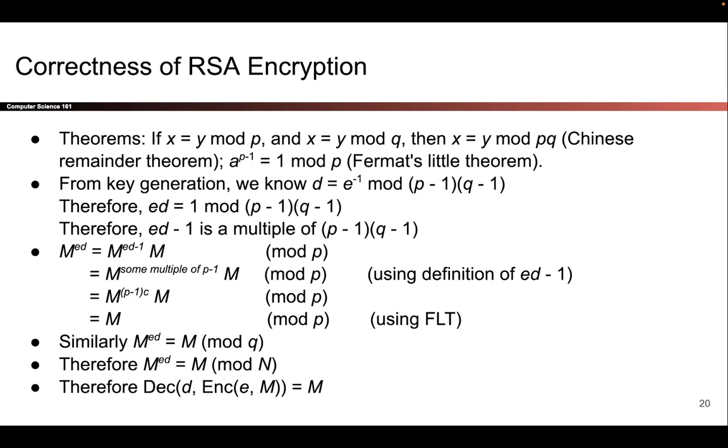Another way to see how that step works is to subtract 1 from both sides. Then you get ed-1 equals 0 mod (p-1)(q-1). And if something is 0 mod (p-1)(q-1), then we know that it is a multiple of (p-1)(q-1). So all we've done here is take the definitions of e and d and rearrange to get this useful fact that ed-1 is a multiple of (p-1)(q-1).